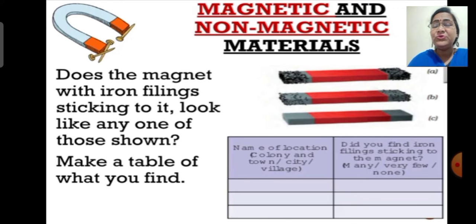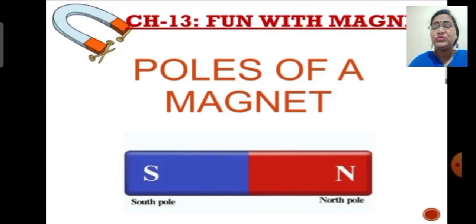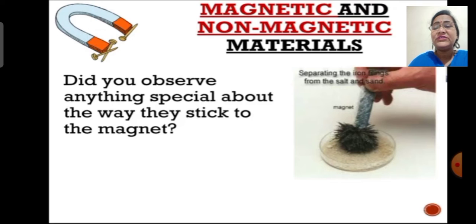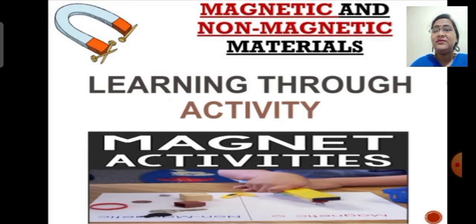Now we are going to learn about the poles of the magnet. A magnet has two poles — one end is the north pole and the other end is the south pole. Let us learn why they are so peculiar. Students, have you ever tried testing a magnet to attract small iron or metal objects? Have you ever noticed anything special or different in the way they stick to the magnet?